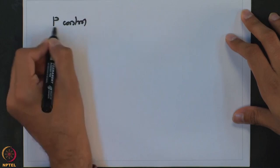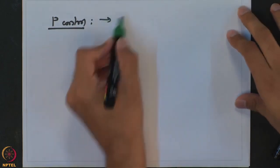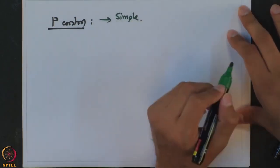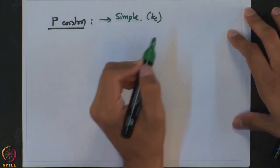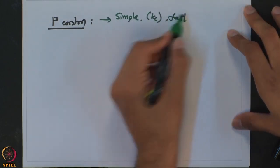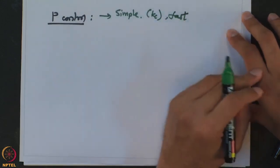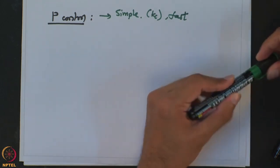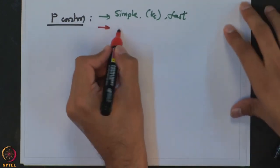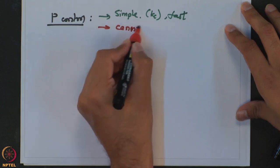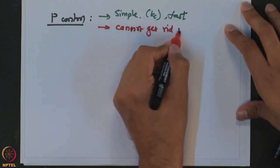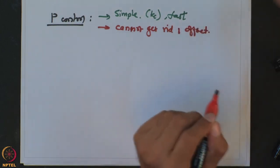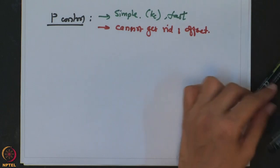When you say P control, or proportional control, the main advantage is it is very simple — there is only one variable, Kc, which you have to decide. It is often very fast; it is a fast action that gives you the control action based on the current error. On the other hand, the main limitation is that it cannot get rid of offset. That is the very main limitation of a P controller.